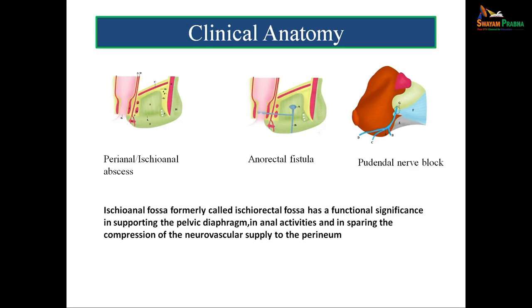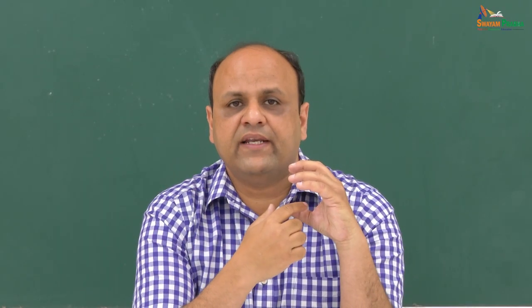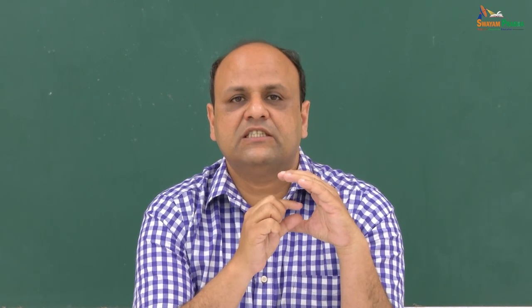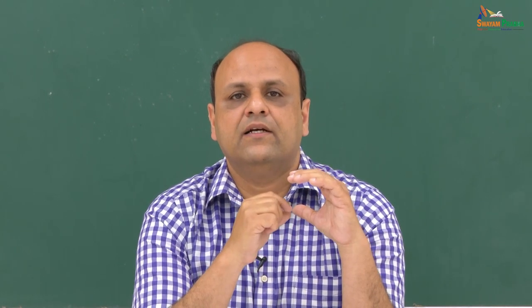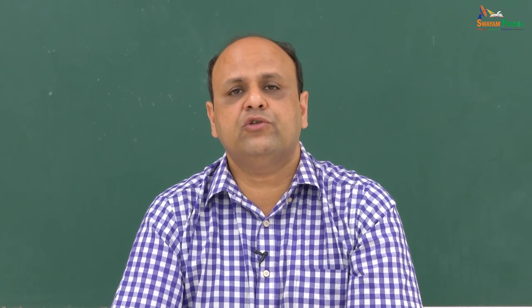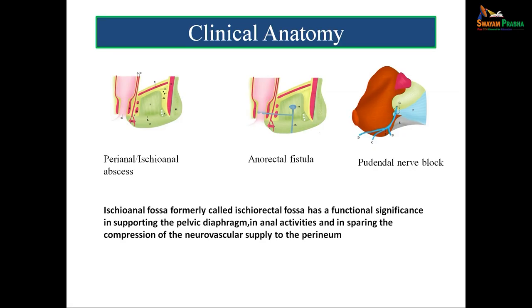The ischioanal fossa has got clinical implications as shown in the slides. One of them is abscess formation in the ischioanal fossa. Because it contains fat, and the fat is loosely arranged, an abscess - which contains fluid - has space to expand since the fat is compressible. Therefore swellings and abscesses in this region of the ischioanal fossa are not that painful. Another applied aspect is the fistula - the fistula in ano, or anorectal fistula.